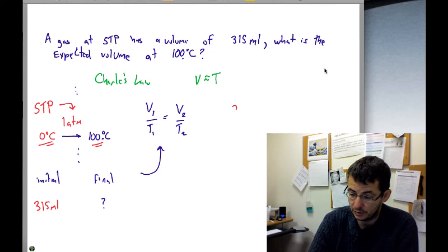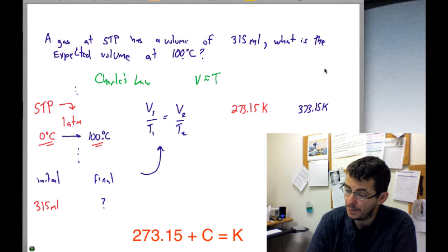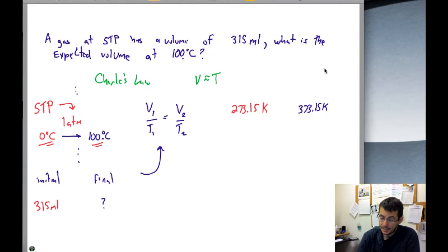So our initial value was 273.15 Kelvin. And our final value was 373.15 Kelvin. Once we have those, we can plug those in. And so plugging that in, we can say that 315 milliliters divided by our temperature of 273.15 Kelvin, that will equal some unknown volume also in milliliters because the units have to cancel correctly, divided by 373.15 Kelvin.